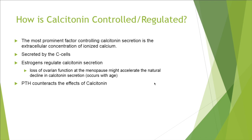How is calcitonin secretion controlled? The most prominent factor is the levels of calcium in the blood, and it's secreted by C cells. Interestingly, estrogen may regulate calcitonin secretion. Women, because they have more estrogen, may have less calcitonin in the blood than men, and therefore they're more susceptible to osteoporosis.